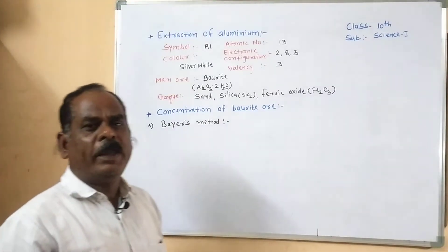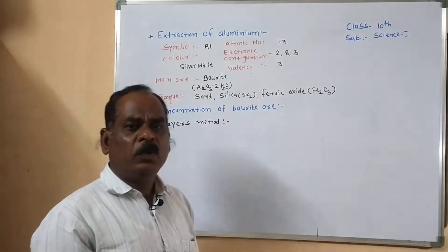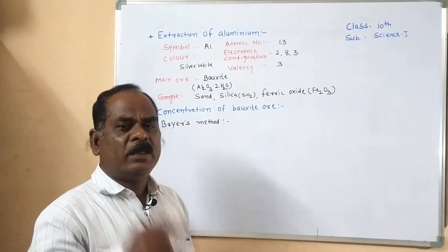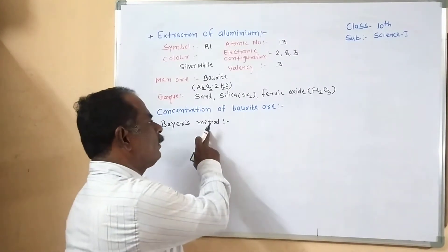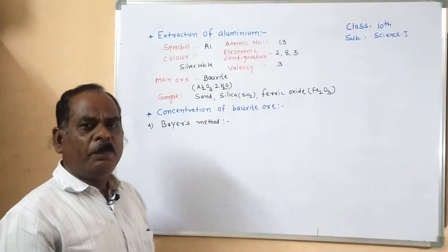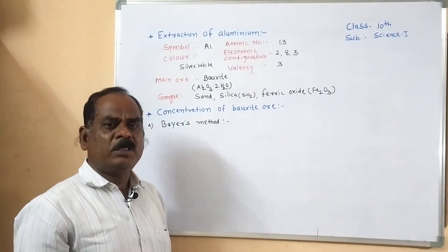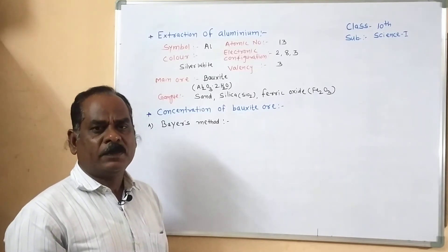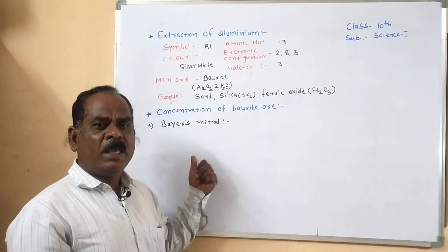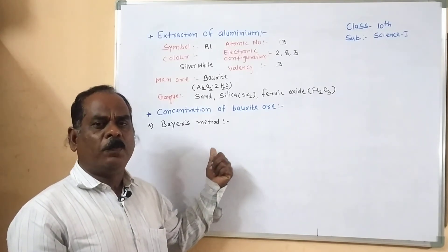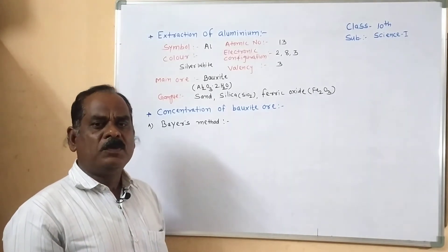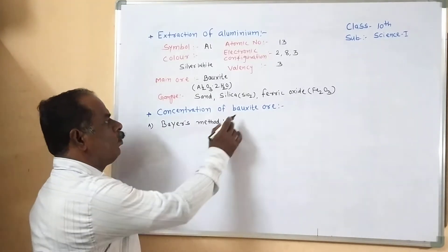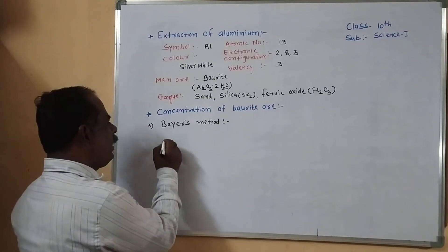Today I will teach you the first step: the concentration of bauxite ore. The bauxite ore is concentrated by two methods — the first is the Bayer method and the second is the Hall method. In the Bayer method, the bauxite ore is concentrated by the leaching process. First, make a powder form of bauxite using mills.